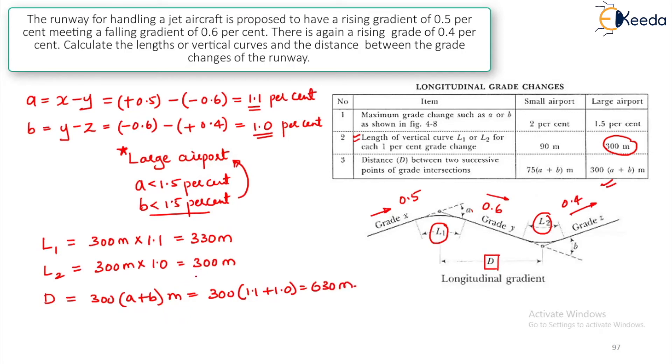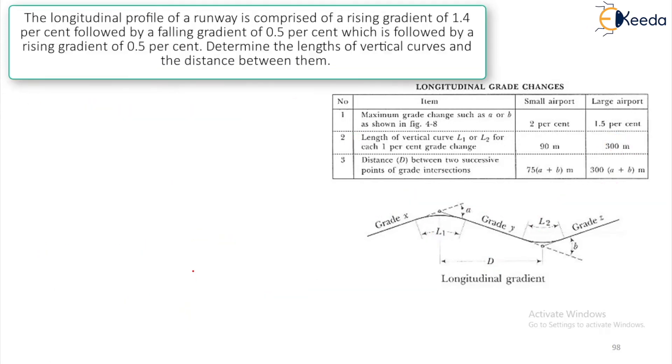This was one question. There is one more question similar but it is for small airport. How do we identify that? Check here. They have given the longitudinal profile of a runway is comprised of a raising gradient of 1.4 followed by a falling gradient of 0.5 which is followed by again a raising gradient of 0.5. Determine the length of vertical curves that is L1 and L2 and the distance between them. First we have to calculate A which is X minus Y. What is X? Plus 1.4 minus what is Y? Minus 0.5, so this is 1.9%.